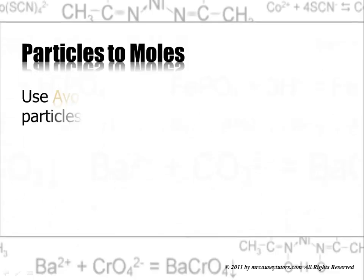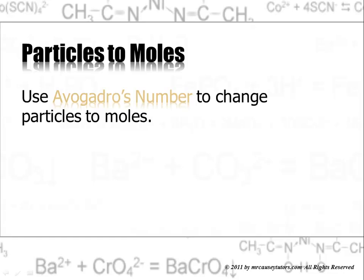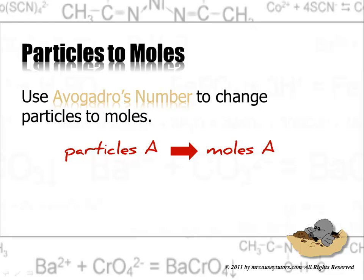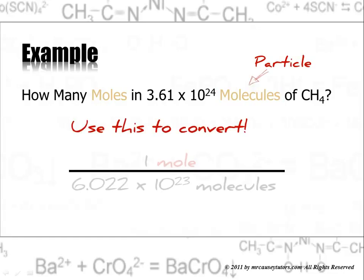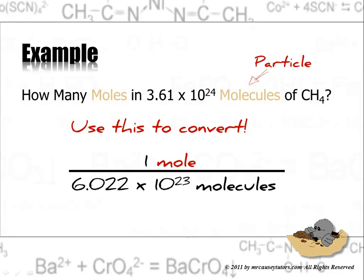Let's do particles to moles. Use Avogadro's number to change particles to moles. Particles of A to moles A. How many moles in 3.61 times 10 to the 24 molecules of CH4, which is methane? Again our particle is molecules. We're going to use this to convert, but this time it's flipped over because we want molecules to cancel out.